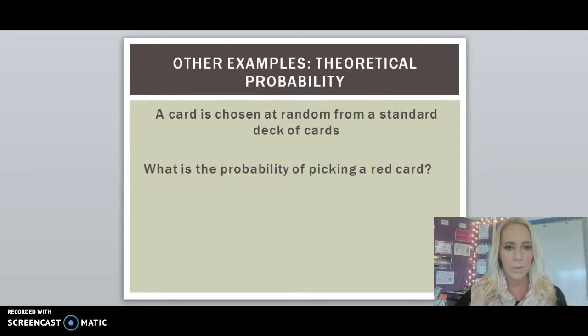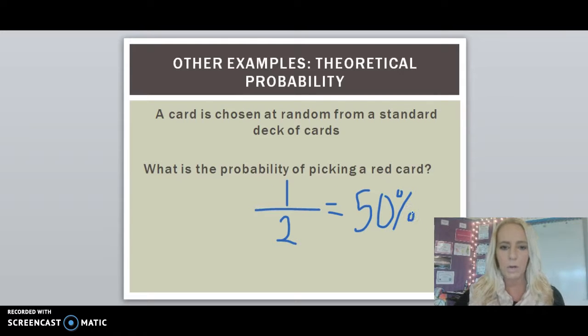We'll look at one more example. So a card is chosen at random from a standard deck of playing cards. What is the probability of picking a red card? Well, in a standard deck of cards, we have two options. The cards can either be black or red. And there's only one color out of two. So the probability of picking a red is one out of two or 50% probability. So you're equally likely to pick a black card as you are a red card.